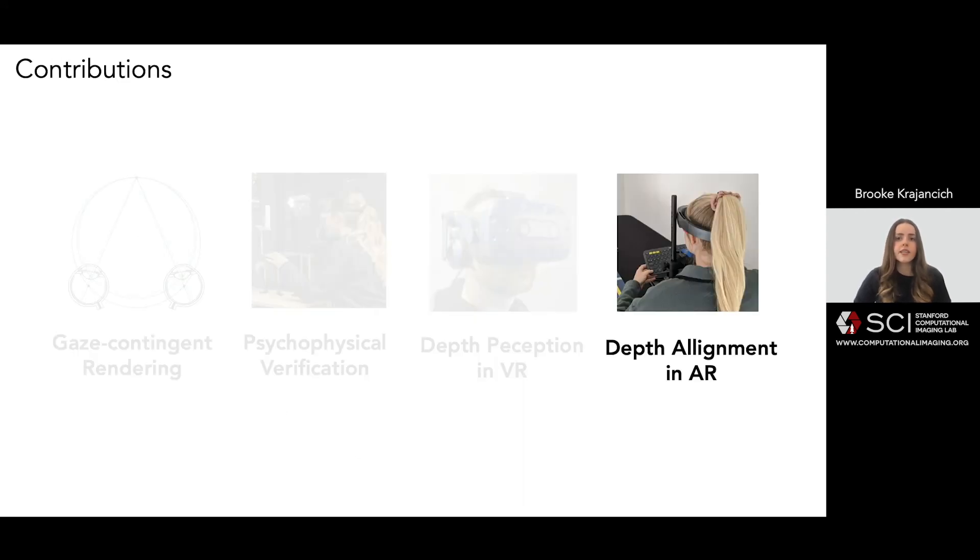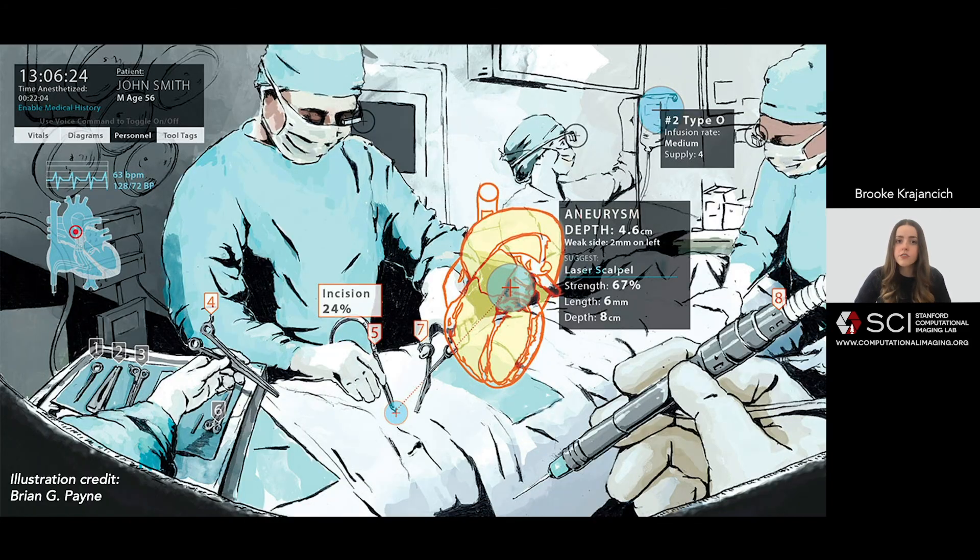The second user experiment we conducted investigated the effect of gaze contingent rendering on the alignment of real and virtual objects in AR. This is an important application, sometimes even life critical. I don't know about you, but I would hope that the data can be aligned with pretty high accuracy before I let my surgeon use AR to decide where to cut into me.